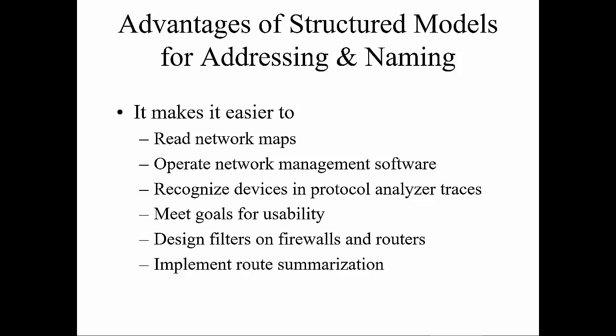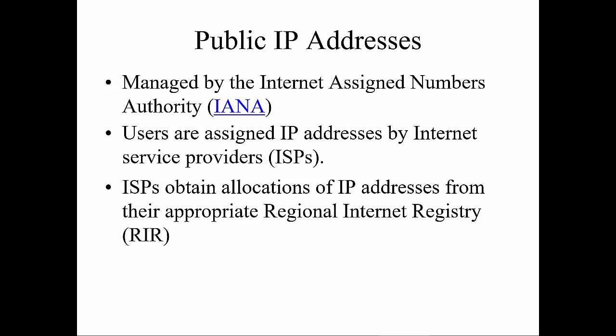Our slides today are going to assume you don't know a whole lot about addressing, so we're going to start off basic and get into basic subnetting. First of all, public IP addresses — how are they managed? In the US, they're managed by the Internet Assigned Numbers Authority, IANA. Users are assigned an IP address, normally by their IP provider. Unless you're paying for a static address, home users normally only receive a dynamic address — meaning it's an address that may change.